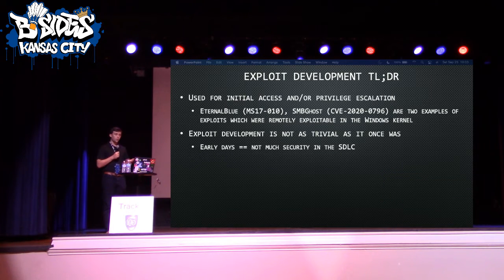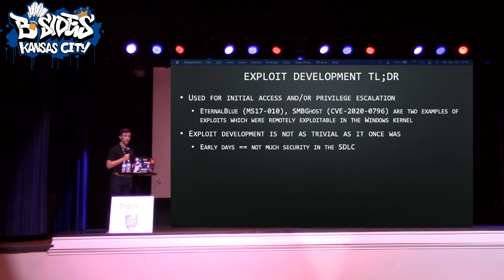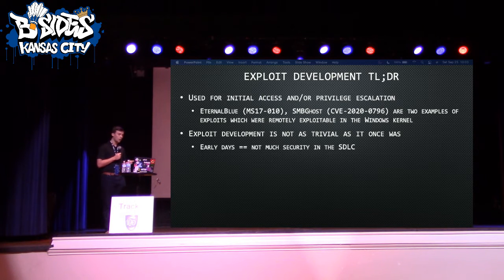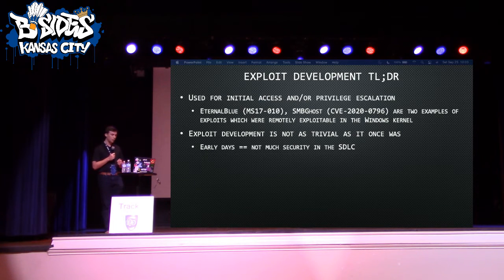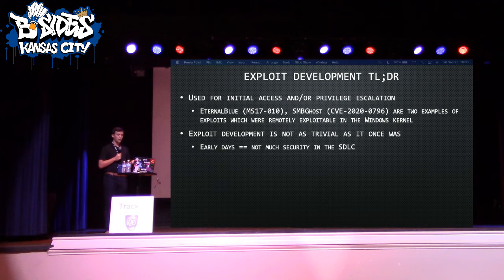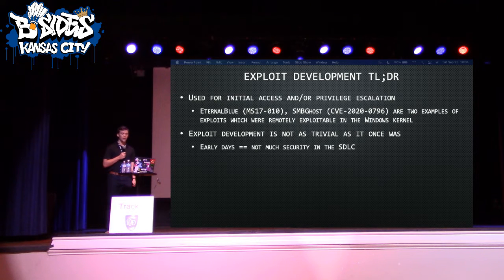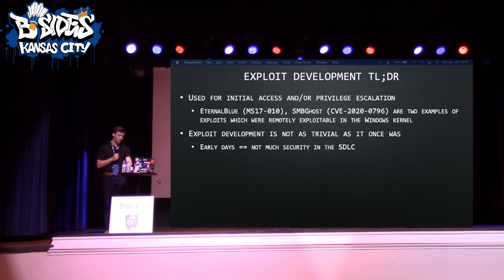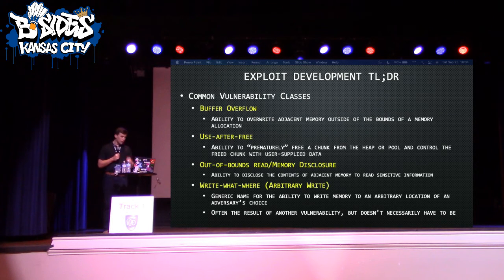These exploits are used for initial access, privilege escalation, or both. EternalBlue — I'm sure most everyone in this room has heard of it — was an example of a remote kernel exploit that could be used for initial access if the service is available, and also privilege escalation. The same with SMBGhost, a recent exploit in the SMB protocol. Exploit development now is not as trivial as it once was. In the early days of software development, there wasn't a lot of security in the pipeline.